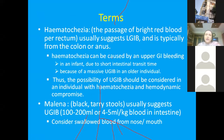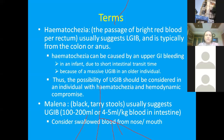Hematochezia is the passage of bright red blood per rectum. It usually suggests lower GI bleeding, typically from the colon and anus. However, in an infant with short intestinal transit time and massive upper GI bleeding, hematochezia can also occur. So upper GI bleeding should be considered in an individual presenting with hematochezia and hemodynamic compromise. Melena is black tarry stool and usually suggests upper GI bleeding — it typically requires more than 5 ml/kg of blood in the intestine, and swallowed blood from the nose and mouth should also be considered as a cause.